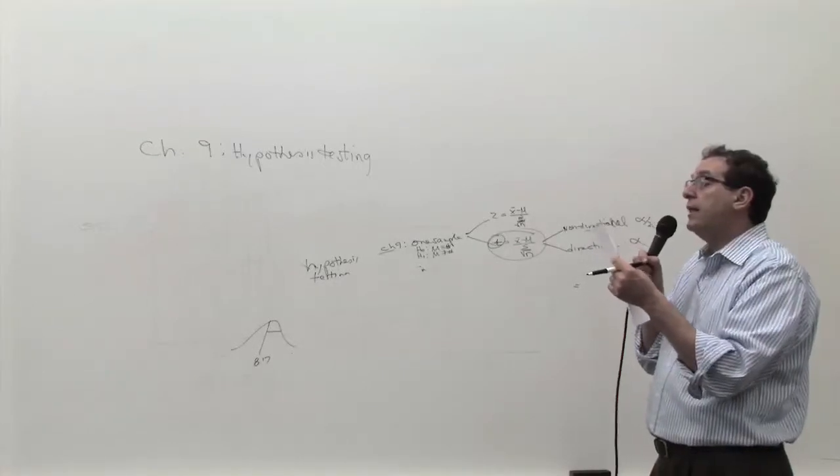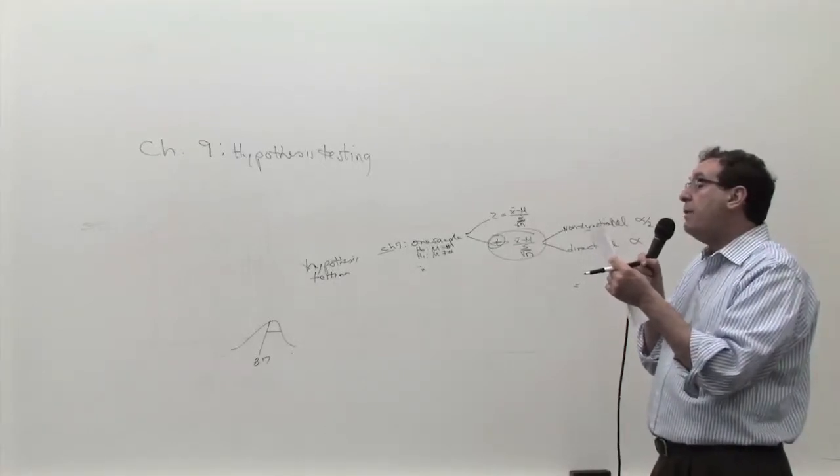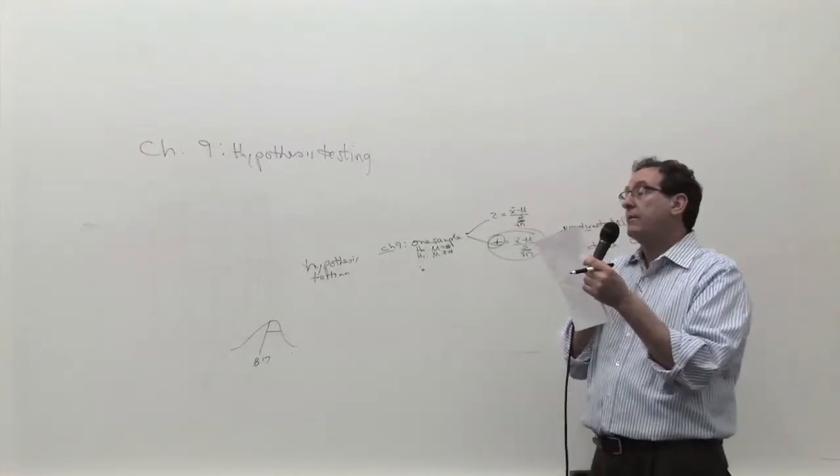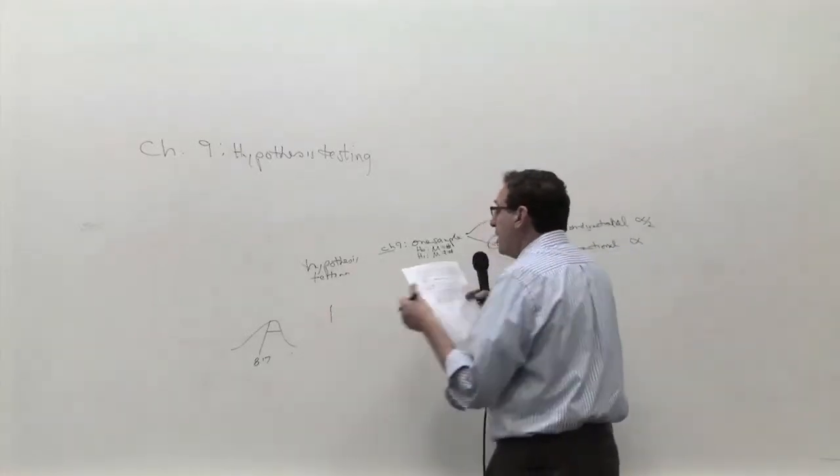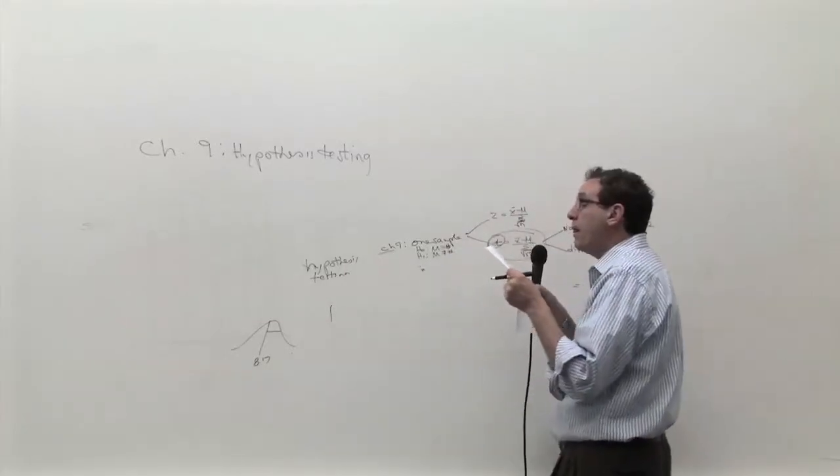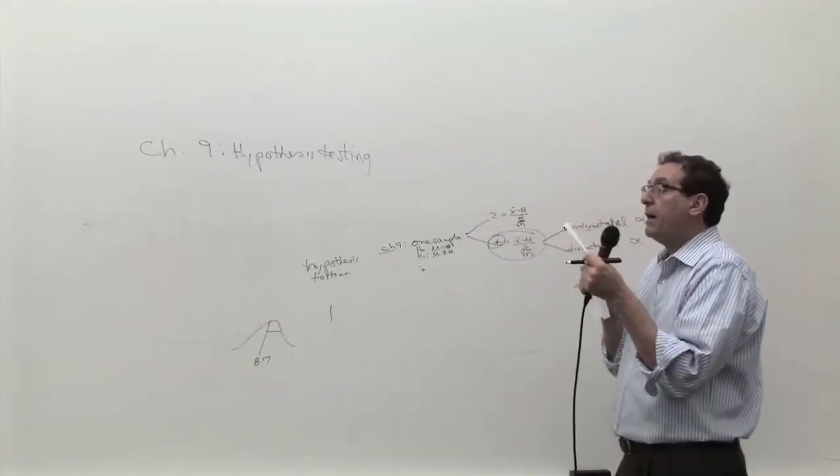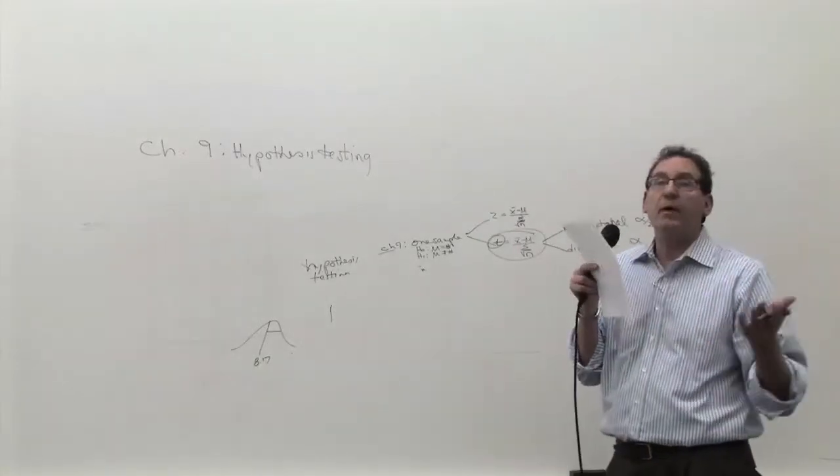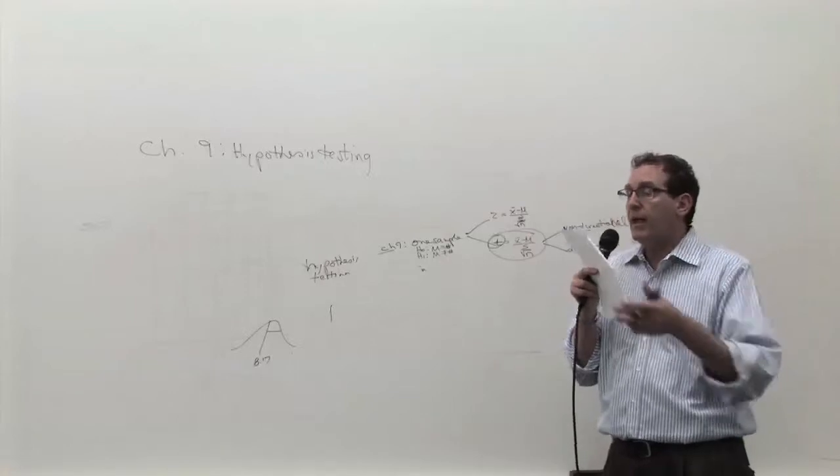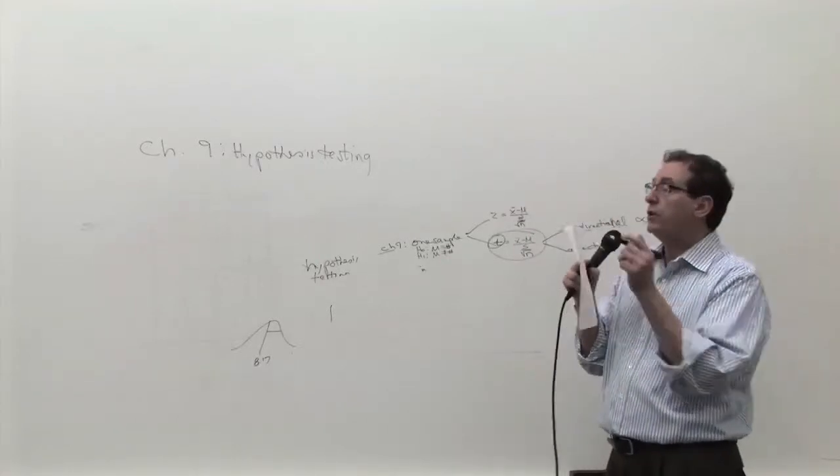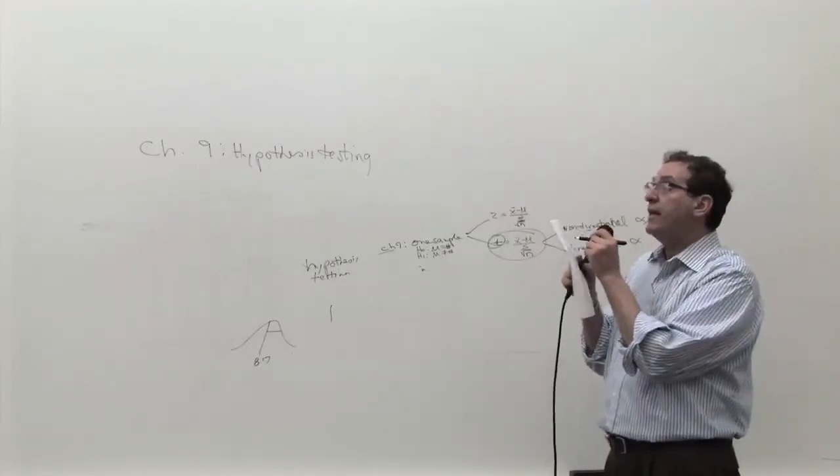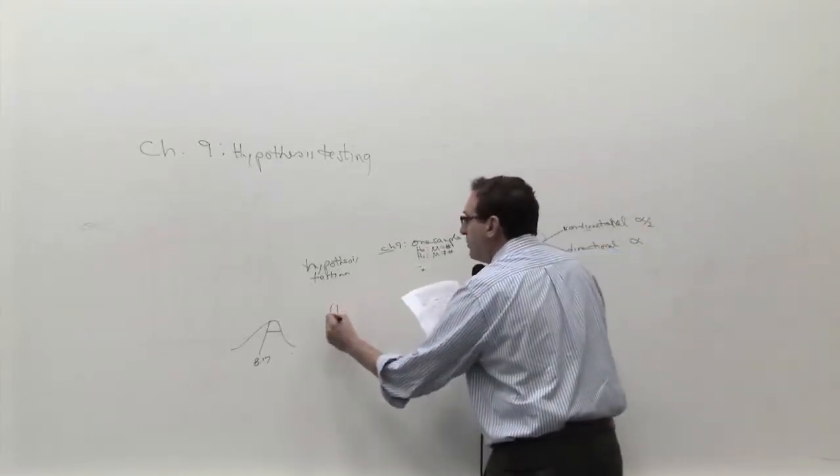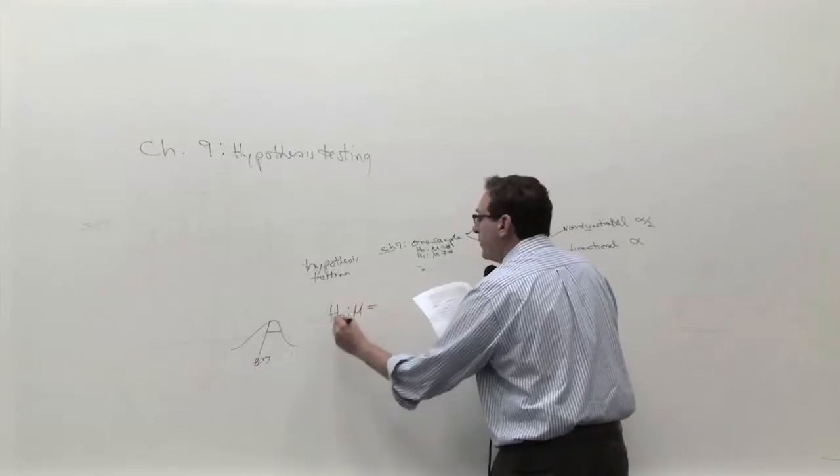A sample of 50 packages is selected, and we want to know if the average is different than 8.17. So the hypothesis question is, is there evidence the population is different than 8.17? Use an alpha of 10%. So it's clearly hypothesis testing, clearly one sample, and clearly non-directional because it says is it different, not high or low. So let's solve the problem in the four-step procedure. The four steps are to put down the hypotheses.